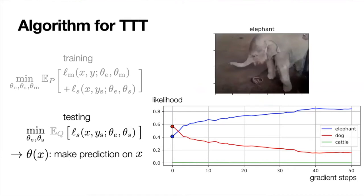For example, given an elephant image corrupted by motion blur, at test-time training iteration zero the model predicts higher probability for dog than elephant. But as test-time training proceeds, the elephant likelihood rises and the prediction becomes correct after a few iterations, eventually converging to winning by a large margin.